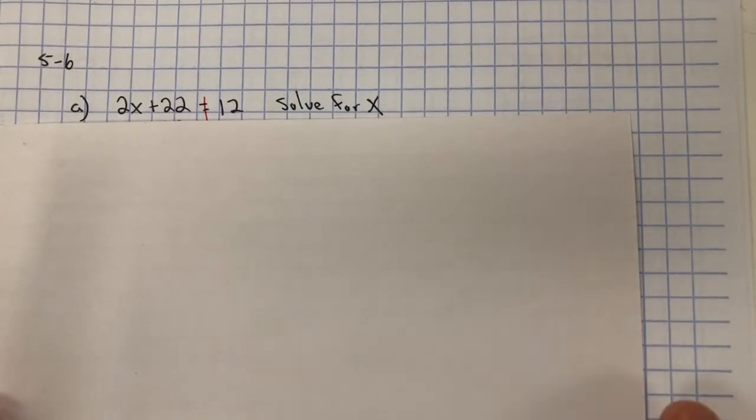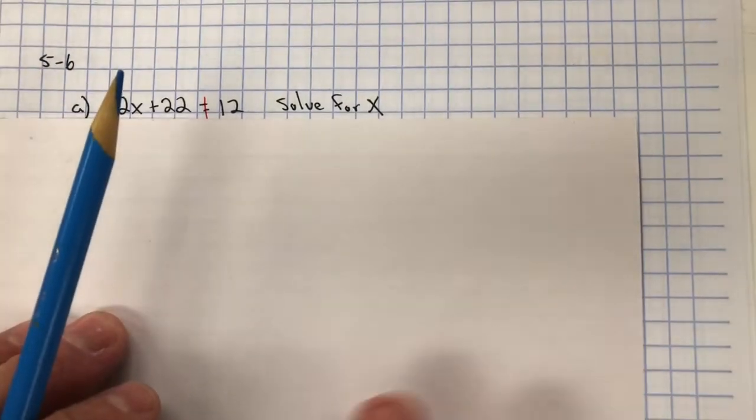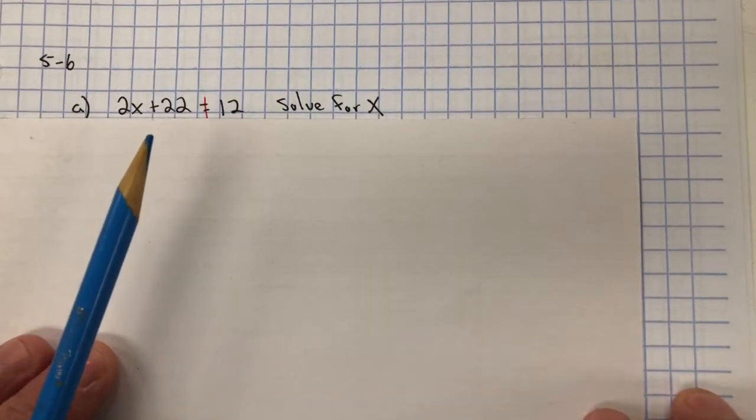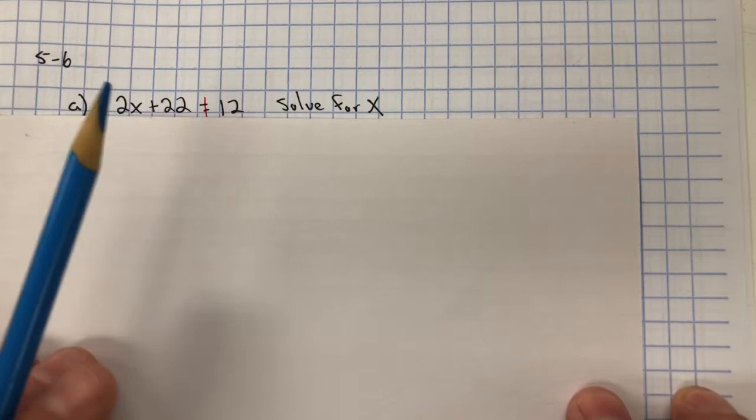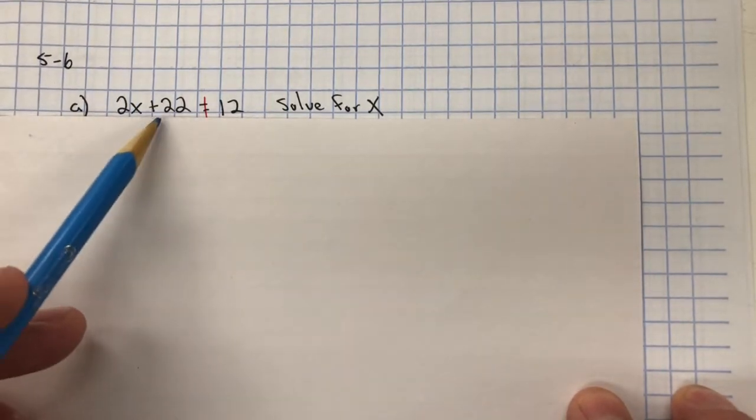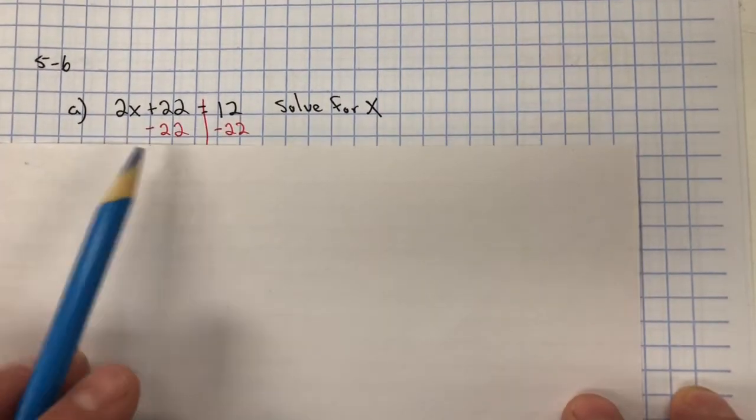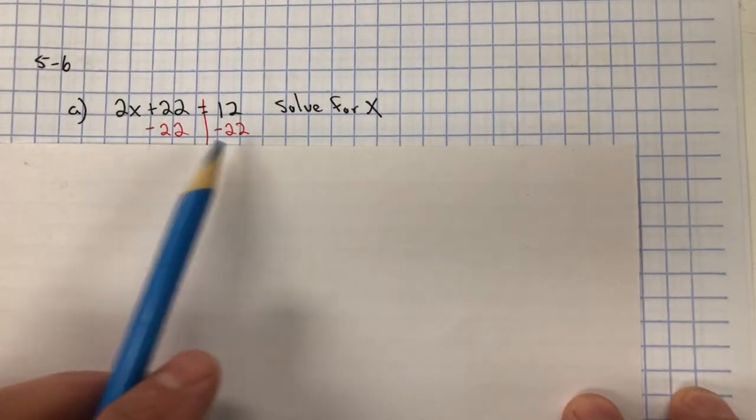In problem 5-6, you need to solve for X. So you need to isolate the variable. We're going to do a bunch of inverse operations to solve for X. First, the inverse property of addition is subtraction, so we're going to subtract 22 from both sides of the equation.